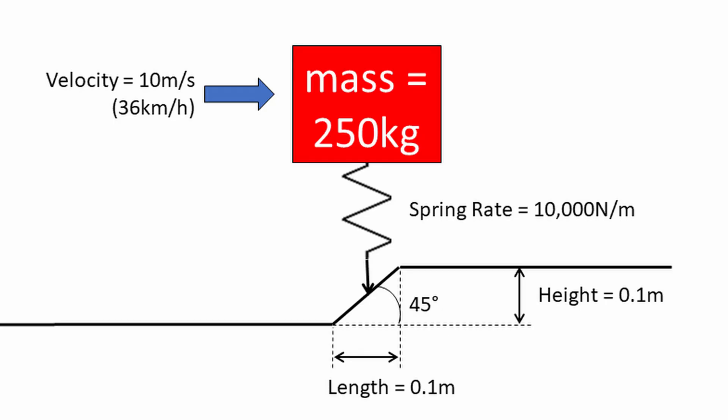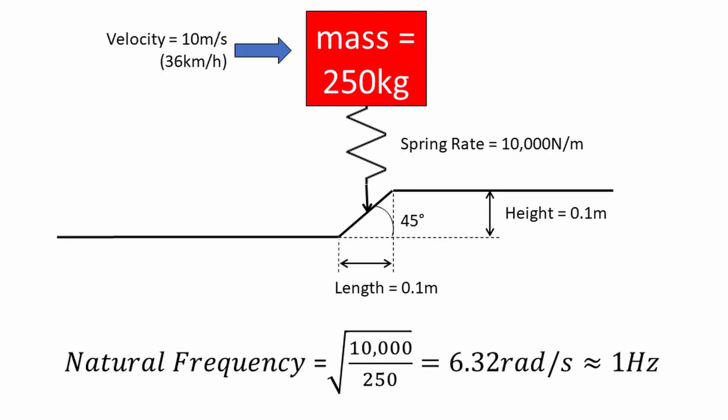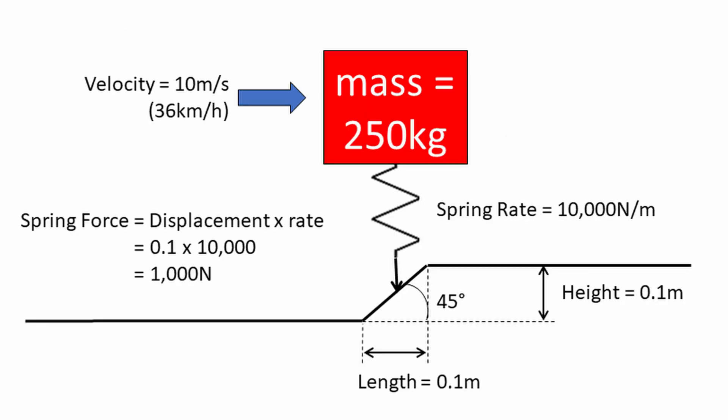In this example, the mass of the body is 250 kilos — that might be the corner weight of a big ATV or something like that. The spring rate is 10,000 newtons per metre. That combination of a 10,000 newton per metre spring rate and a 250 kilogram corner weight gives us a natural frequency of almost exactly one hertz.